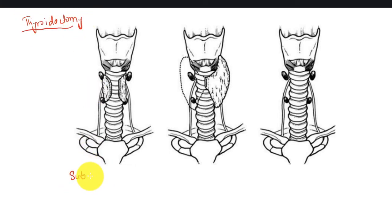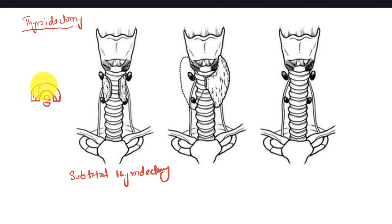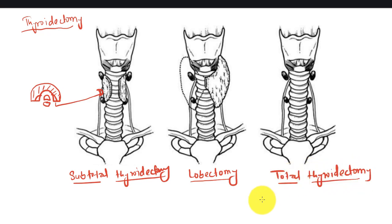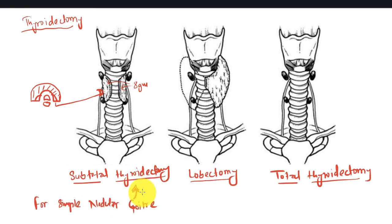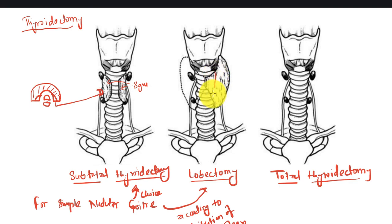Let's look at how thyroid operations are performed. Thyroidectomy options include subtotal thyroidectomy, where we leave the posteromedial portion of the thyroid lobe; lobectomy; and total thyroidectomy. In simple nodular goiter we try to leave eight grams on each side. Subtotal thyroidectomy is the operation of choice, and lobectomy is chosen according to the distribution of the pathology. In lobectomy we remove the medial half of the other lobe.